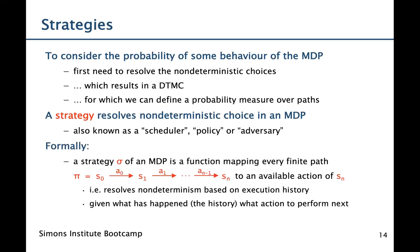Formally, a strategy is a function that maps every finite path to an available action of the last state of that path. Since it chooses based on the path, it resolves the non-determinism based on the execution history. Given what has happened in the past, a strategy tells us what action to perform next.